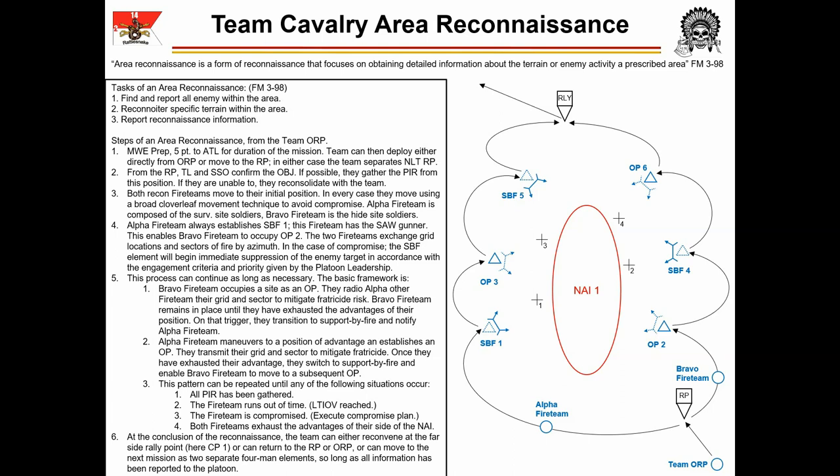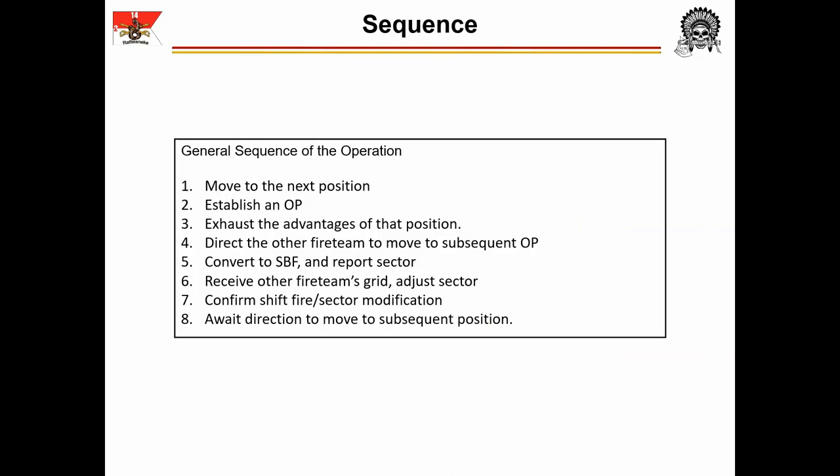Alpha Fireteam will collect until their position's advantage is exhausted, then radio Bravo Fireteam. Alpha then becomes the support-by-fire position and Bravo moves to emplace at a subsequent OP. This pattern continues with each team flip-flopping between OP — when covered by the opposite team's support-by-fire — and being a support-by-fire while the other team moves. The general sequence: a fireteam moves to the next position, establishes an OP, and exhausts that position's advantages. They then direct the other fireteam to move, convert to support-by-fire, and report their sector. Once the other fireteam is emplaced as an OP, the support-by-fire team adjusts their sector, confirms the sector modification, and awaits direction.